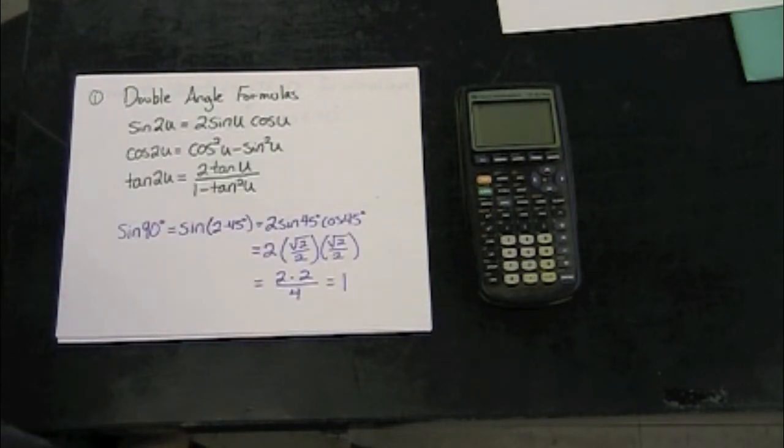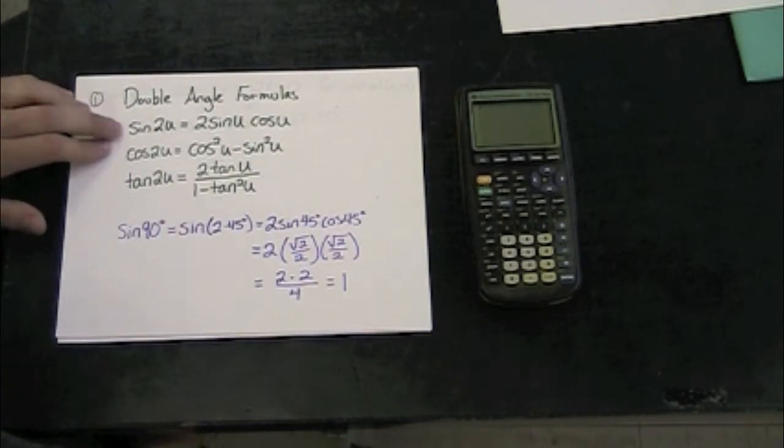Let's start with our double angle formulas. We have a double angle formula each for sine, cosine, and tangent, and they are enumerated here.